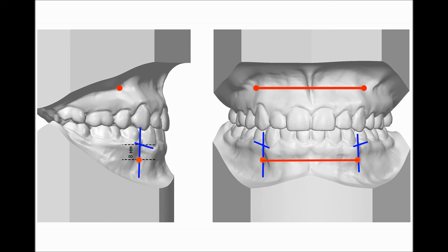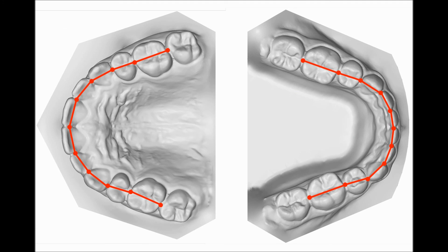The width of the apical base in permanent dentition amounts to 44% of the total width of 12 permanent teeth on the upper jaw and 43% on the lower jaw.